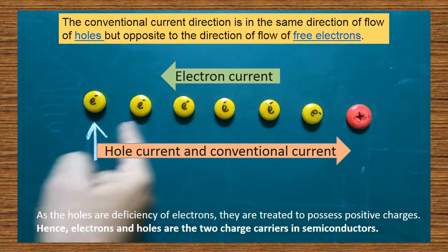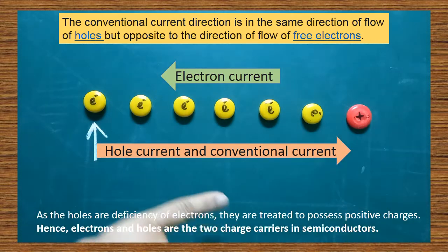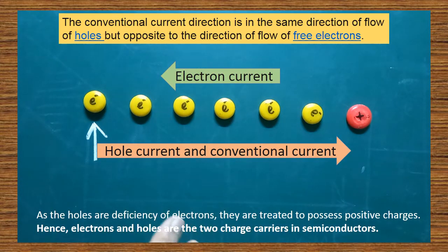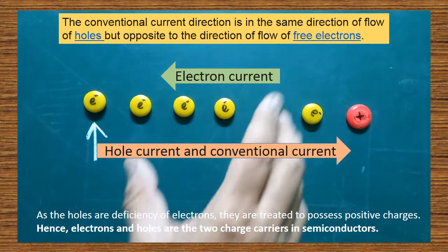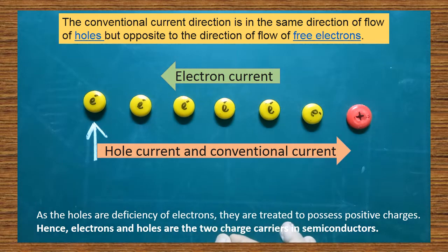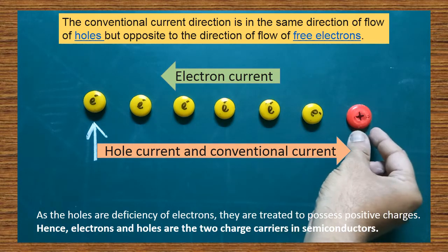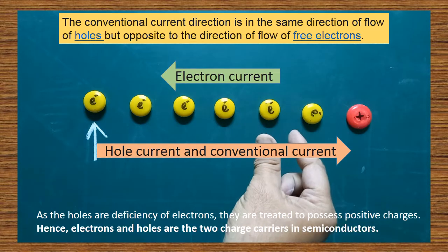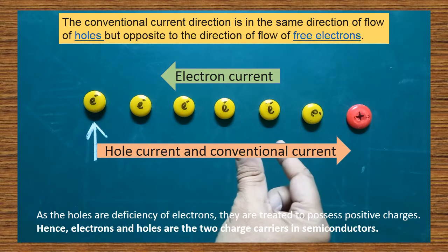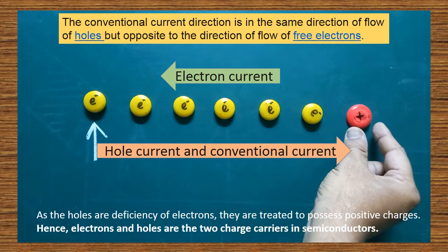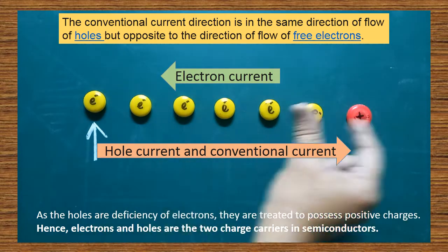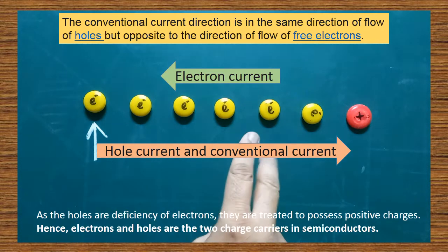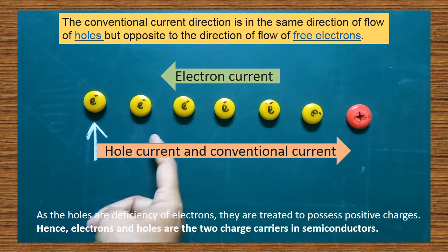Electron moves in the opposite direction of hole current. This is the direction of electron current and this is the direction of hole current — both are taking place in the opposite direction. Actually, the electron moves — that is a real particle. The vacancy which is created by the absence of an electron is called a hole. Electron is really moving. This hole appears to be moving from one end to another end. So there are two types of currents in the case of semiconductors: one is called hole current and another one is called electron current.